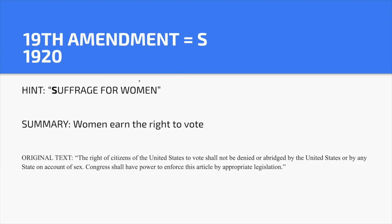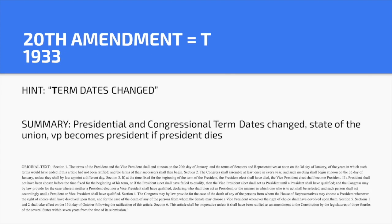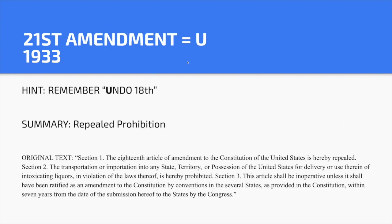Nineteenth Amendment — S. Hint: 'Suffrage for women.' Women earned the right to vote — 100 years ago. Twentieth Amendment — T. Hint: 'Term dates changed.' The presidential and congressional term dates changed from March to January, and it also states that if the president dies, the VP becomes president. Twenty-first Amendment — U. Hint: 'You undo the 18th' — it repealed Prohibition. What can you do when you're 21? You can drink.